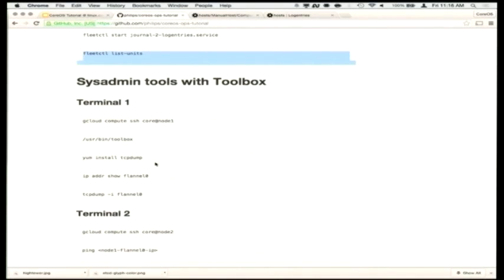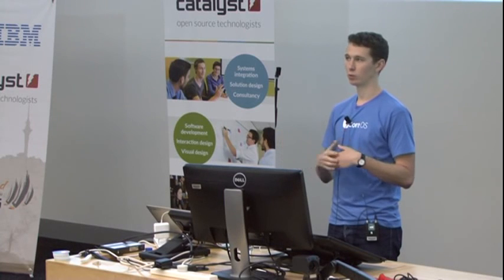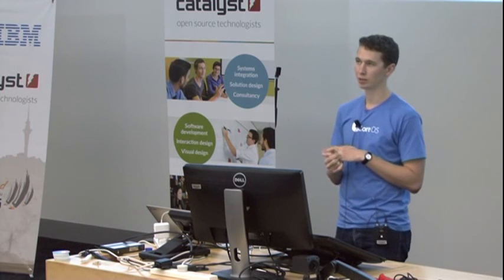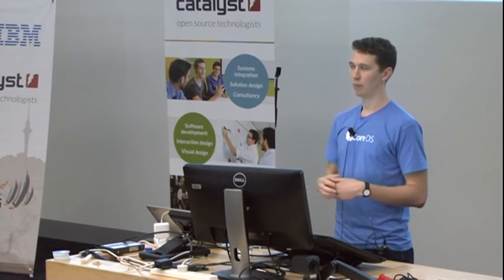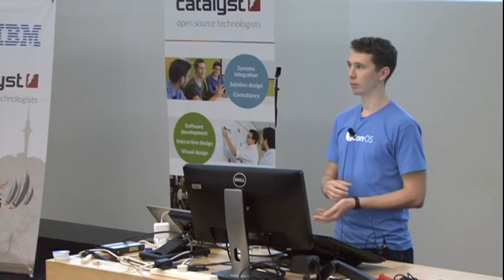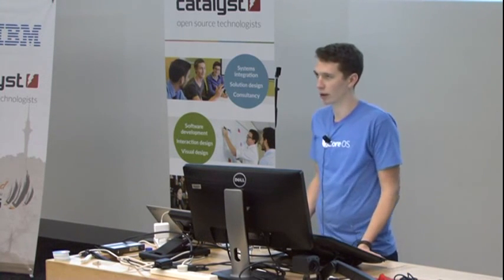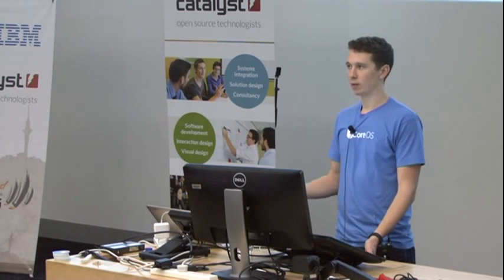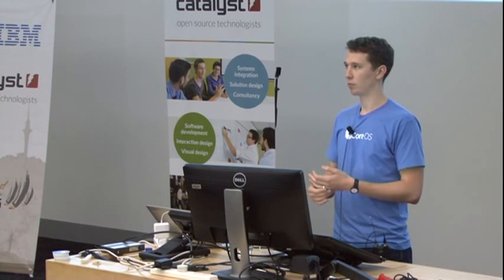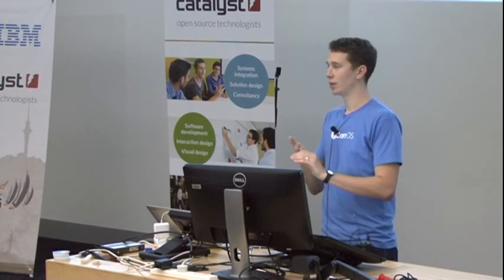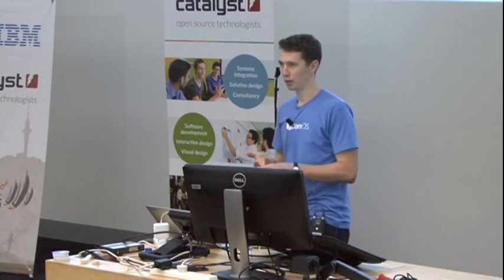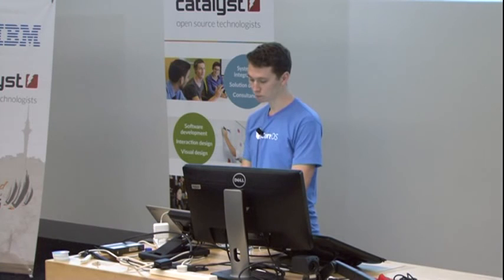Another common question we get about CoreOS is 'where are all my system administration tools?' CoreOS does not have a package manager. We believe that containers provide all the utility of package management but free the individual operating system vendor from having to ship and snapshot all of open source at a given time. The primary things inside CoreOS are SSH, the kernel, and the container runtime system — these are what's required to get your application running.